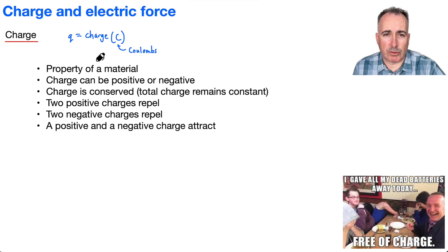Charge can be negative, for example. Charge can be positive. We're going to say it's conserved, which means it's going to be the same before and after. It'll remain constant.